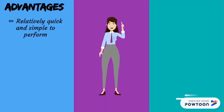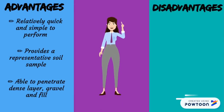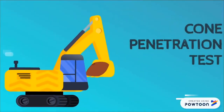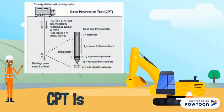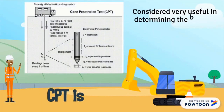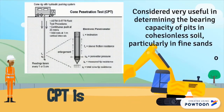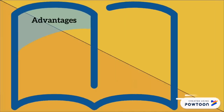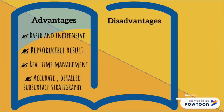These are the advantages and disadvantages of the standard penetration test. The cone penetration test is considered very useful in determining the bearing capacity of piles in cohesionless soil, particularly in fine sands of varying density. In the CPT process, a 60-degree cone with a face area of 10cm² and a 50cm² friction sleeve is hydraulically pushed into the ground at a constant speed of penetration by applying a measured force to the rod. These are the advantages and disadvantages of the cone penetration test.